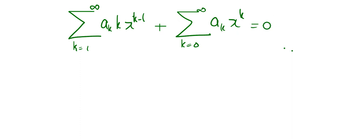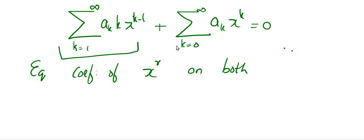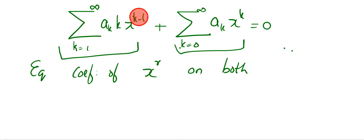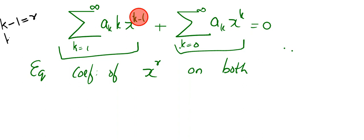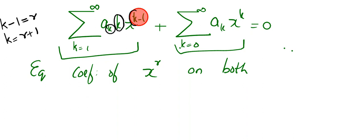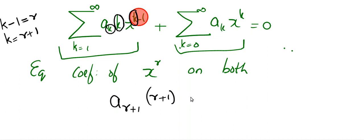Now the most important step: equating coefficients of x to the power r on both sides. You can see that there are two summations in this equation, and every summation contains an infinite number of terms. I am going to create x to the power r on each of the summations. The power in the first summation is k minus 1. So I write: k minus 1 should become r, because I want the power to become r. Then I find k is equal to r plus 1. If I replace k with r plus 1, I get the coefficient of x to the power r — which is a sub (r plus 1) times (r plus 1).